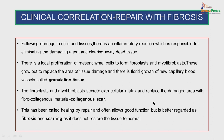Clinical correlation: repair with fibrosis. Following damage to the cells and tissues, there is an inflammatory reaction responsible for eliminating the damaging agent and clearing away dead tissue. There is a local proliferation of mesenchymal cells to form fibroblasts and myofibroblasts. These grow out to replace the area of tissue damage and there is florid growth of new capillary blood vessels, called granulation tissue. The fibroblasts and myofibroblasts secrete extracellular matrix and replace the damaged area with fibrocollagenous material — that is the collagenous scar. This has been called healing by repair, but is better regarded as fibrosis and scarring as it does not restore the tissue to normal.